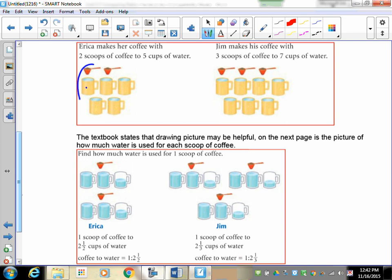If you take a look at Erica's, when you divide one scoop up it works out to be this whole cup, this whole cup, and half of this one. So kind of like this is the part that you got there and she draws that right there. The other two and a half are here. So the ratio of coffee to water is basically one scoop to two and a half cups of water.